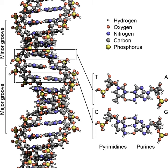The double helix is a right-handed spiral. As the DNA strands wind around each other, they leave gaps between each set of phosphate backbones, revealing the sides of the bases inside. There are two of these grooves twisting around the surface of the double helix. One groove is 22 angstroms wide and the other 12 angstroms wide. The larger groove is called the major groove, while the smaller, narrower groove is called the minor groove. The narrowness of the minor groove means that the edges of the bases are more accessible in the major groove. As a result, proteins like transcription factors that bind to specific sequences in double-stranded DNA usually read the sequence by making contacts to the sides of the bases exposed in the major groove.